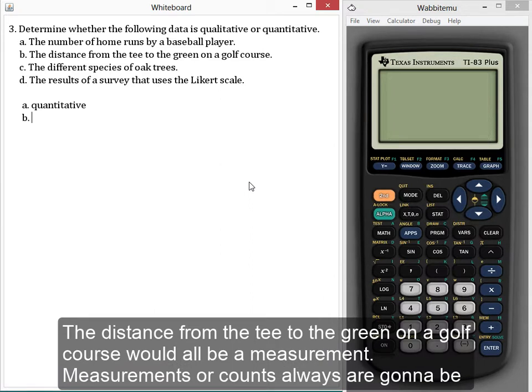The distance from the tee to the green on a golf course. That would be a measurement. Measurements and counts always are going to be quantitative.